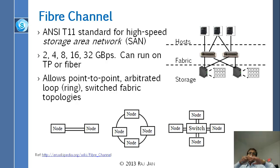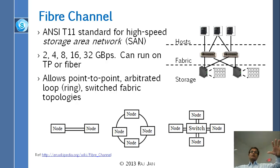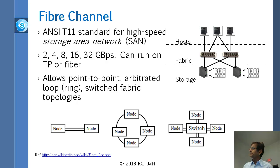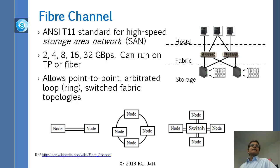ANSI has many groups — just like IEEE has 802 and so on. They have T11, T10, T9. T11 does this part and they standardized Fiber Channel for storage area network. So this is already a network. There are three parts: there is host, there is storage, and there is a network — but they do not call it network, they call it fabric.